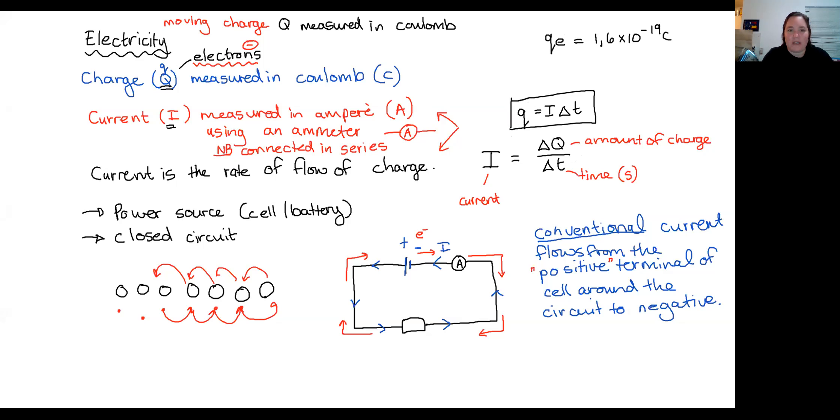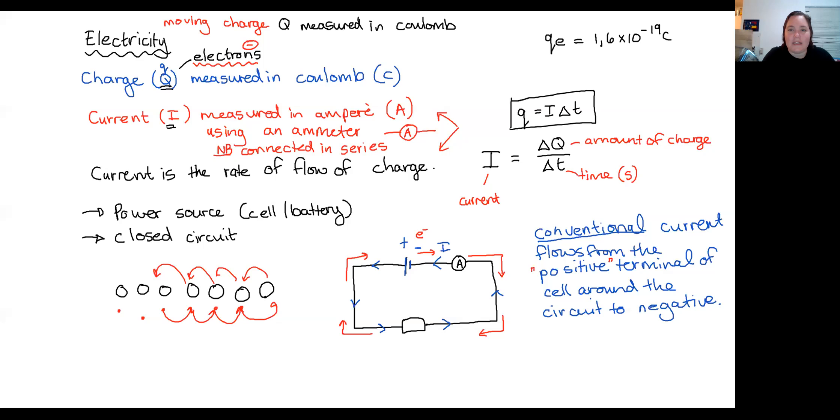Can I quickly check — is everybody good with the idea of what current is, what conventional current is, and what you need in order for the charges to flow? That looks like a good number of you. All right, let's go back to my whiteboard. I'm going to quickly clear everything off here — please take a screenshot if you need one. Now we're going to move on to potential difference.